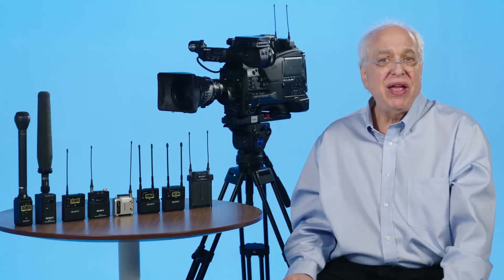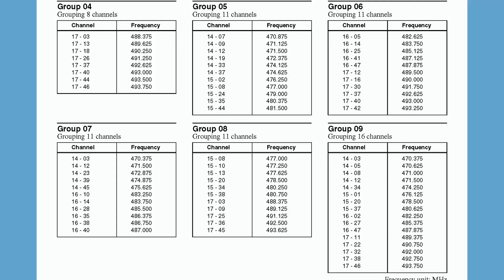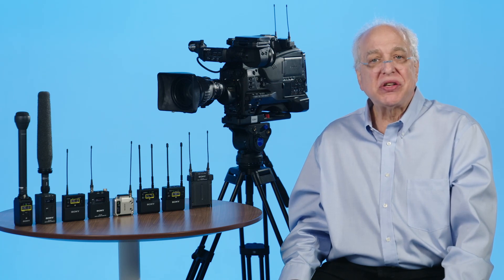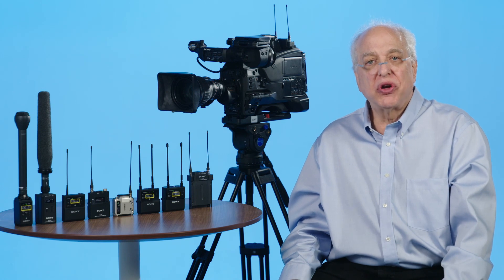If you need at least 11 compatible channels at one time, you can use groups 5 through 8, which use some frequencies from each of two different TV channels. Depending on which channels are used by a TV station in your area, pick the group that uses your combination of open channels. If you need at least 16 different compatible channels, use group 9 — a scan in group 9 will do a very fast scan of compatible frequencies from all four TV channels in your chosen band.